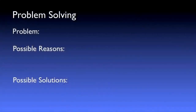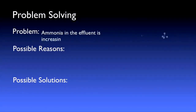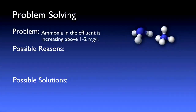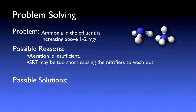Now let's take a look at some real-life operational scenarios. During routine operational sampling, you notice that the ammonia in the effluent is beginning to rise above 1–2 mg/L. We know that nitrification is an oxygen-hungry process, so perhaps the aeration is insufficient. We also know that nitrifiers grow more slowly, so perhaps the SRT is too short due to a temperature influence.